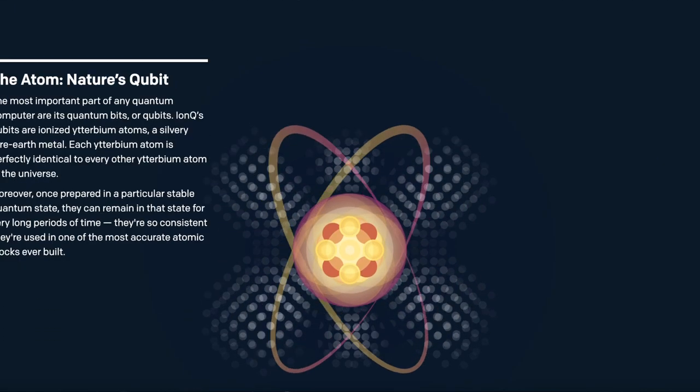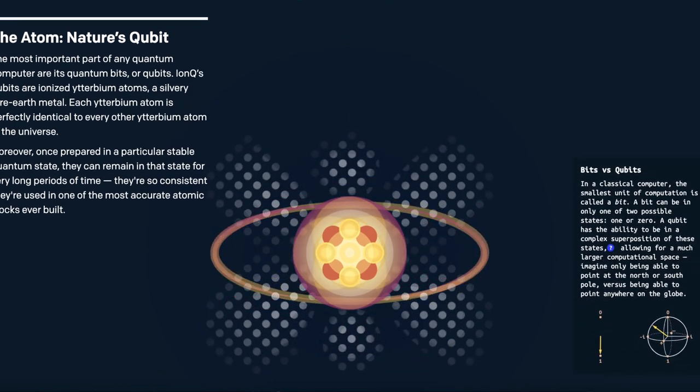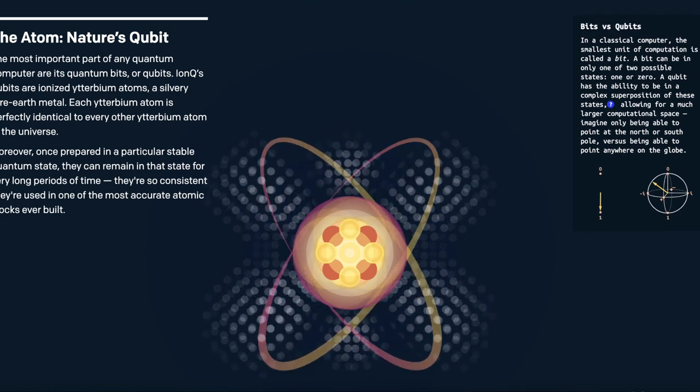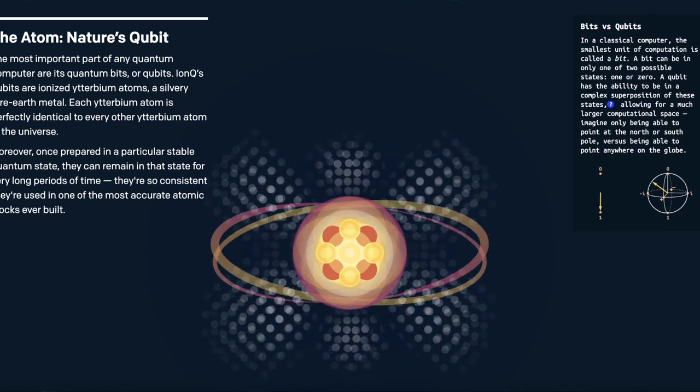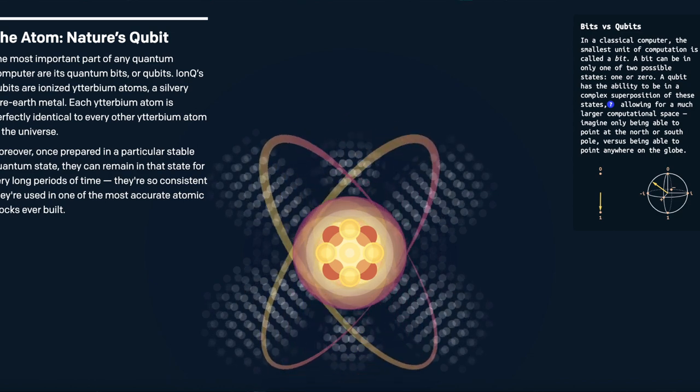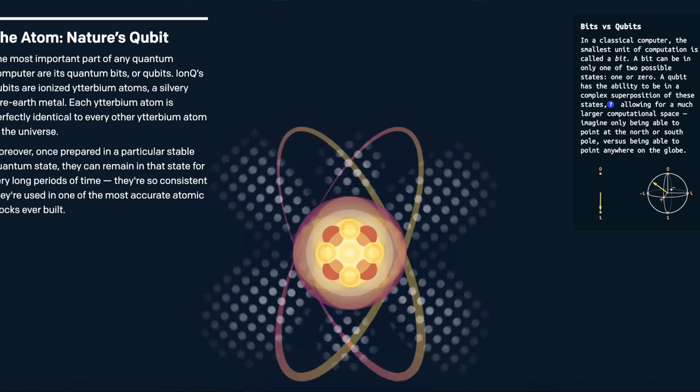In a quantum computer, its most defining components are called quantum bits or qubits, which are ionized ytterbium atoms. Once these atoms are prepared in a particular stable quantum state, they can remain in that state for very long periods of time. They're so consistent, in fact, that they're used in one of the most accurate atomic clocks ever built.